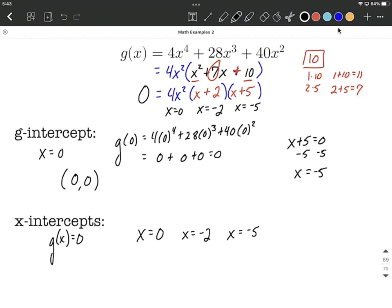As ordered pairs, these are going to be 0 for our x value and 0 for our y value or g of x value, negative 2 for our x value and 0 for our y value, and negative 5 for our x value and 0 for our y value. And that's how you could write them as ordered pairs.